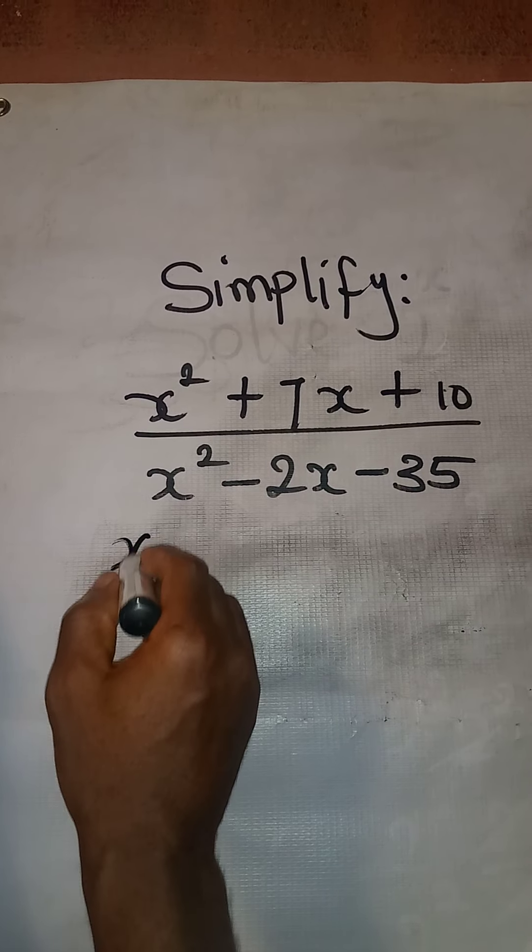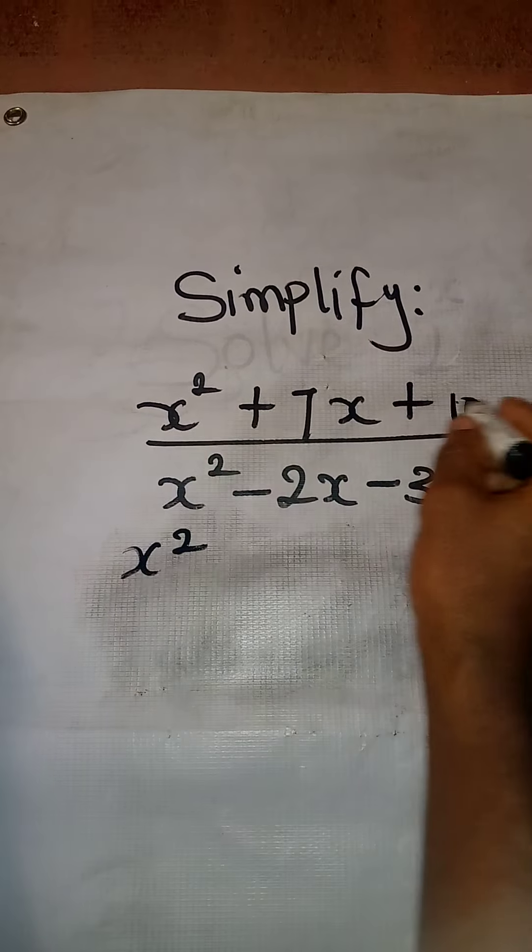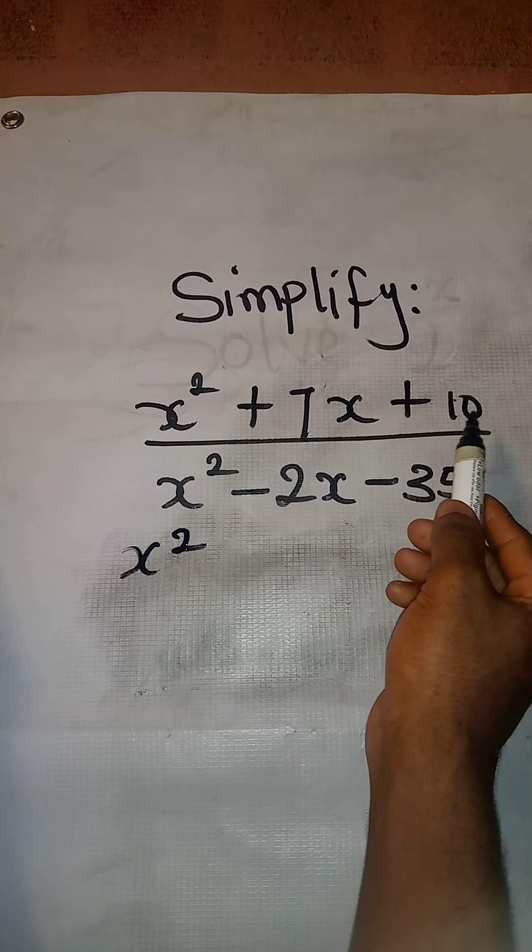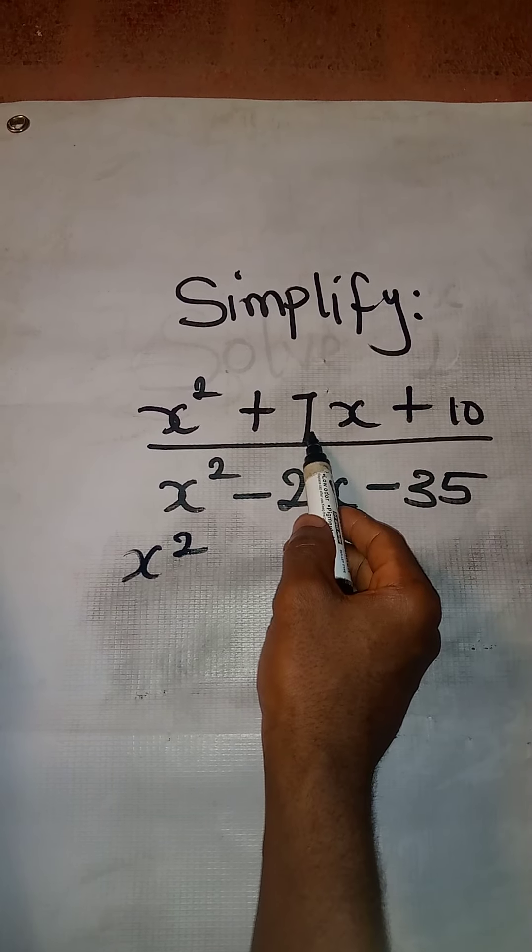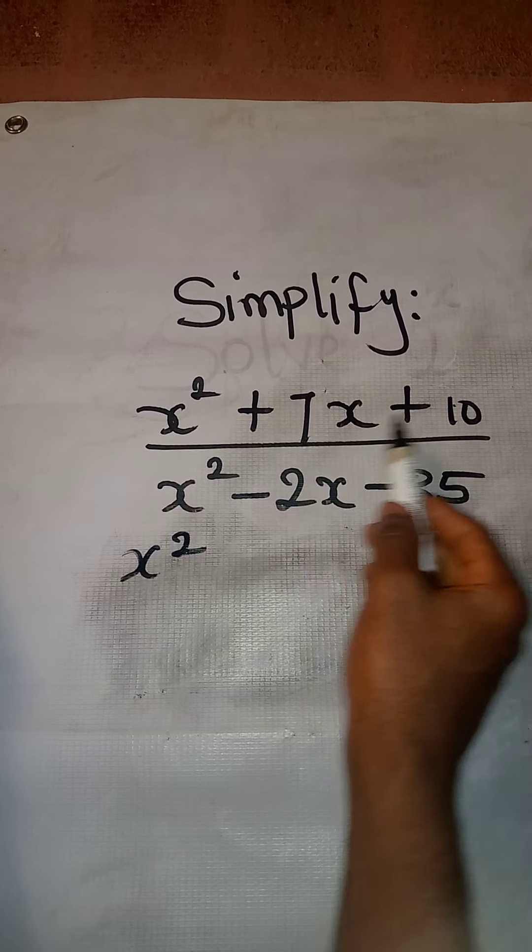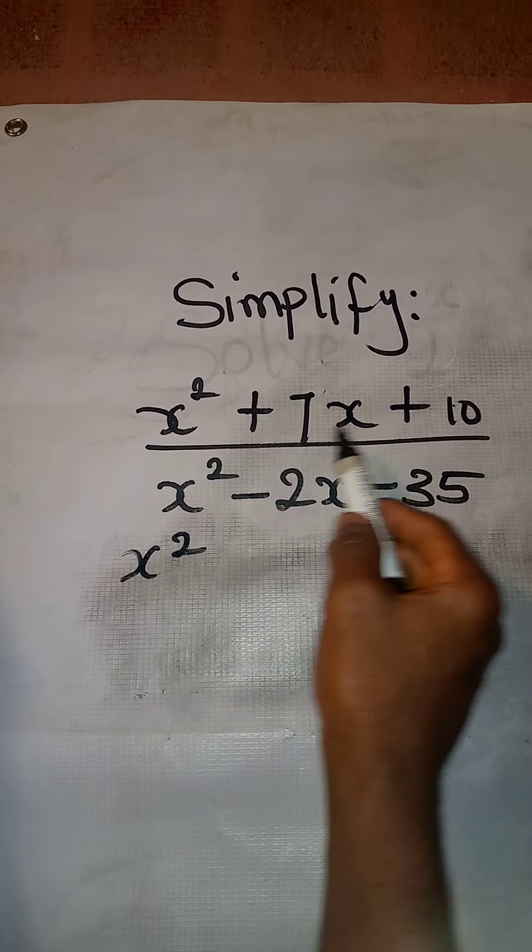We are going to have x squared. That is for the numerator. You look for two numbers you will multiply to have 10 and then you add them to have 7. I believe the two numbers should be 5 and 2.